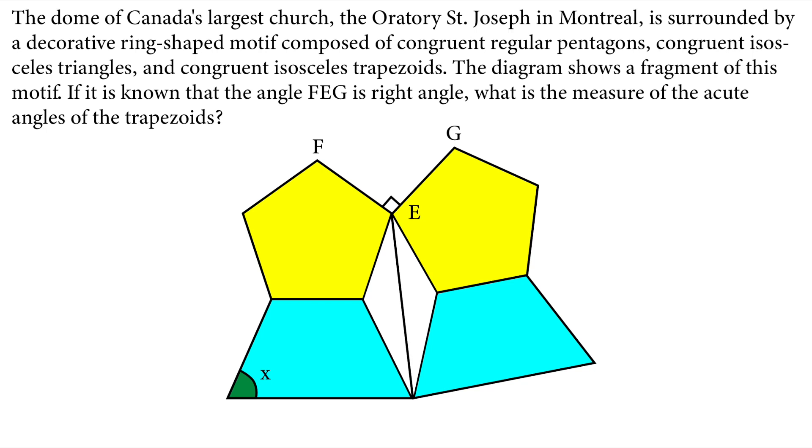The dome of Canada's largest church, the Oratory St. Joseph in Montreal, is surrounded by a decorative ring-shaped motif composed of congruent regular pentagons, congruent isosceles triangles, and congruent isosceles trapezoids. The diagram shows a fragment of this motif.